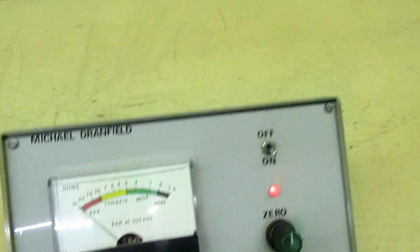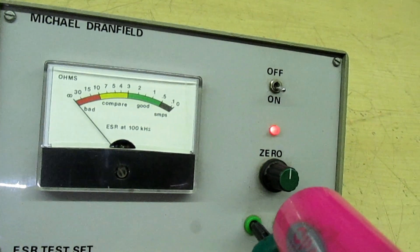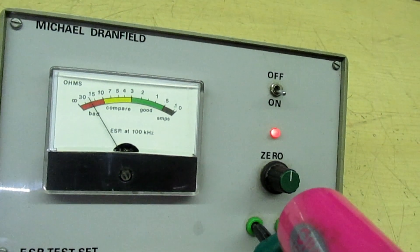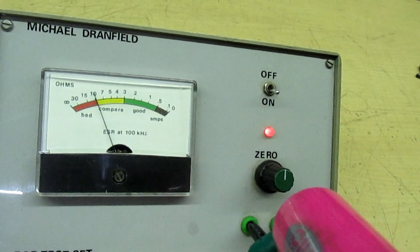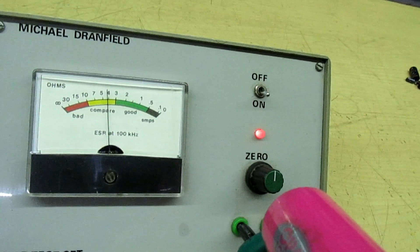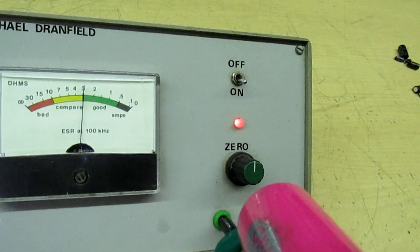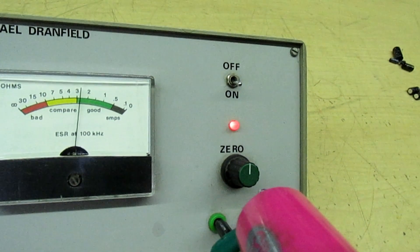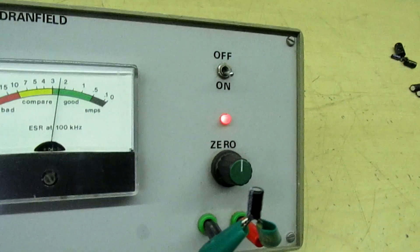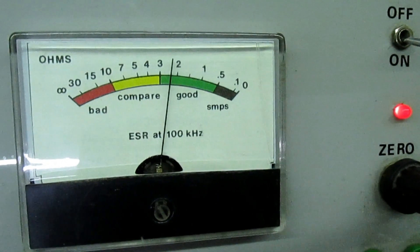If I heat it back up again, you see the ESR now falling again. If you keep heating it, now it's hot, it only has an effective series resistance of about 2.5 ohms.